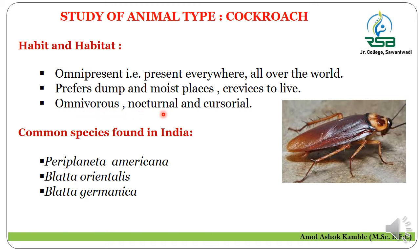The cockroach is nocturnal in habit, meaning it is active during the night. It is also cursorial in habit. The common species found in India are: first, Periplaneta americana — Periplaneta is the genus name and americana is the species name. Second is Blatta orientalis, and third is Blatta germanica.